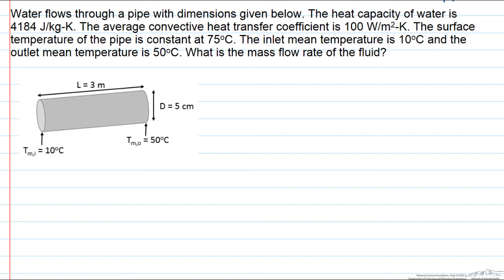The mean temperature of the fluid at the inlet is 10 degrees C and that at the outlet is 50 degrees C. We are given an average convective heat transfer coefficient. If our surface temperature, which is constant, is equal to 75 degrees C, what is the mass flow rate of the fluid?